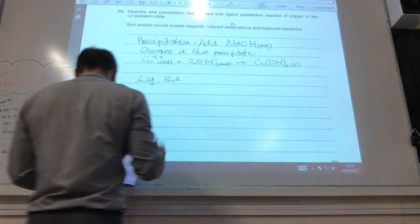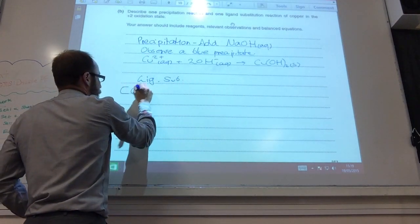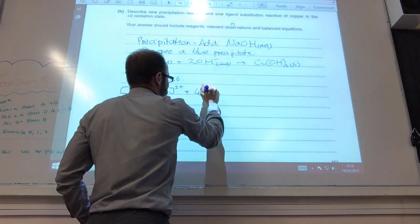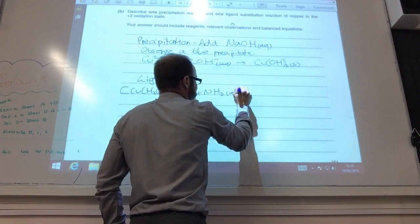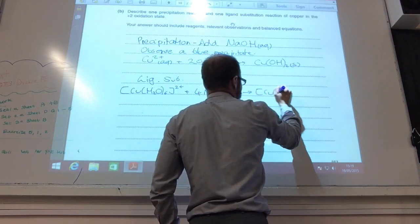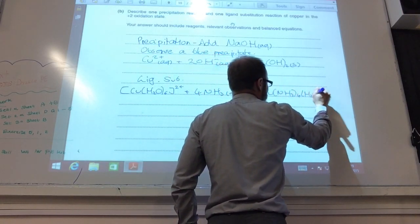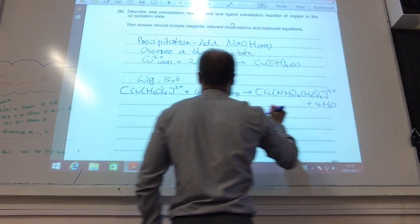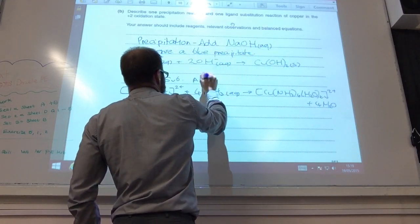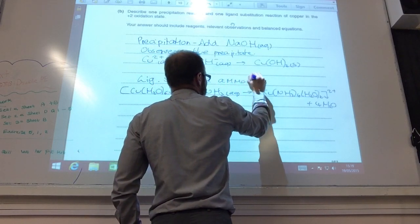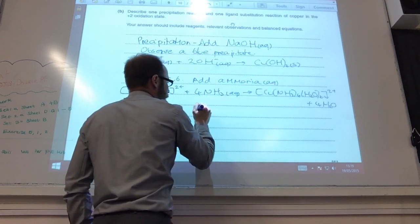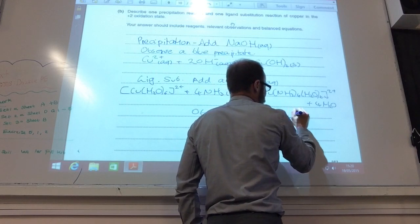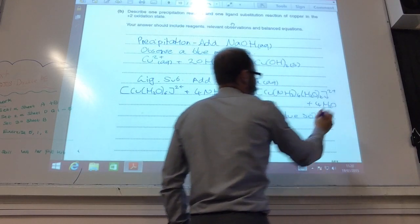Ligand substitution. Next one, you've got this one. Let's do copper surrounded by six water ligands, adding in four ammonia ligands gives me [Cu(NH3)4(H2O)2]2+, and that's also going to be plus four H2O. I need to add ammonia solution to get that to work, and I would observe a deep blue solution.